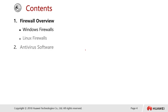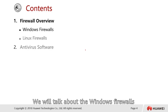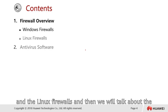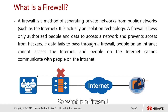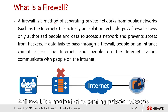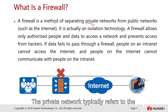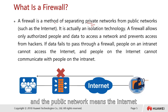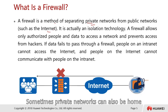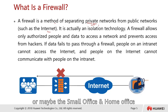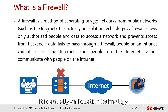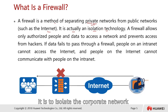The course contents cover Windows firewall, Linux firewall, and antivirus software. A firewall is a method of protecting private networks from public networks. Private networks typically refer to corporate or company networks, while public networks refer to the Internet. Sometimes private networks can also be home networks or small office/home office setups. It is essentially an isolation technology to separate the corporate network from the outside.